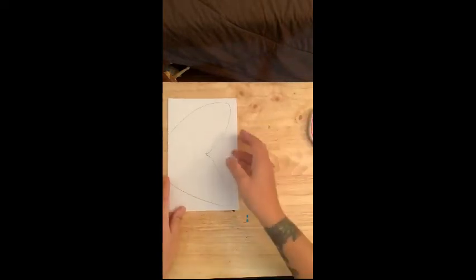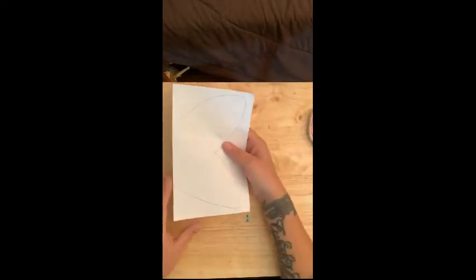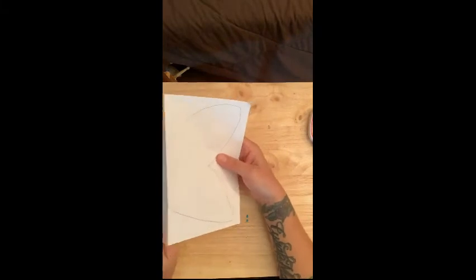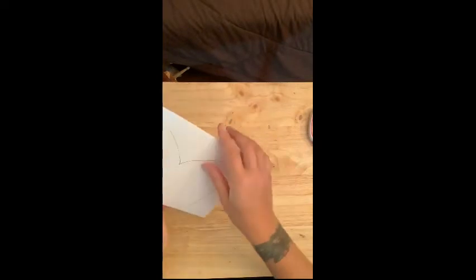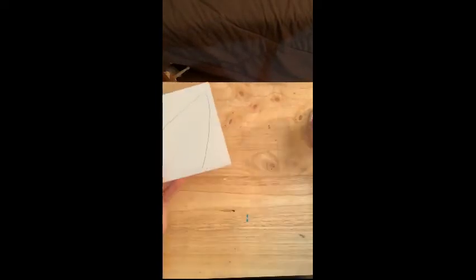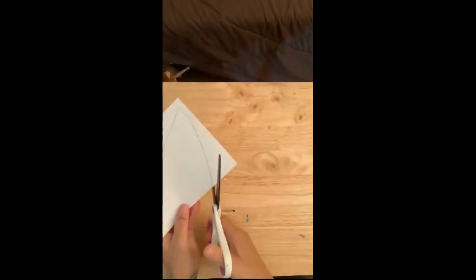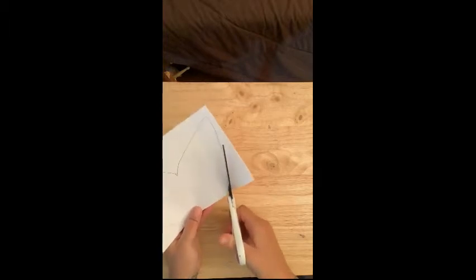I'm going to take my scissors. Let's make sure I started on the fold. Good, I started on the fold. I'm going to keep the paper together. I'm not going to open it and cut it. So don't open it and cut on the lines. Keep it together. Keep the paper together like this. And I'm just going to cut carefully along my pencil lines.